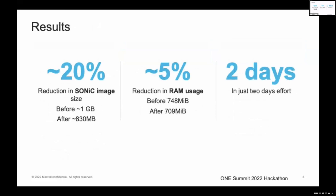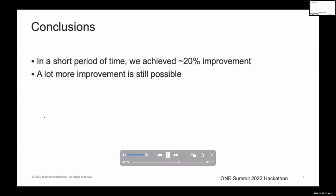Let us look at the results we achieved from the optimizations discussed so far. For the SONiC image size, we saw roughly 20% decrease. Before, the image size was around 1GB and now it reduced to 830MB. We also saw a 5% reduction in RAM usage — before it was 748MB and now it reduced to 709MB. And all this we could achieve in just two days of effort. We achieved roughly 20% improvement without disabling any features.